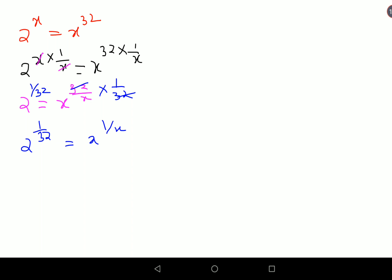Now what we can do is multiply the index by 2 over 2. So you get 2 raised to 2 times 1 over 32, the whole raised to 32 times 2. So you are left with x raised to 1 over x on one side. This eventually comes out to be 4 raised to 1 over 64.